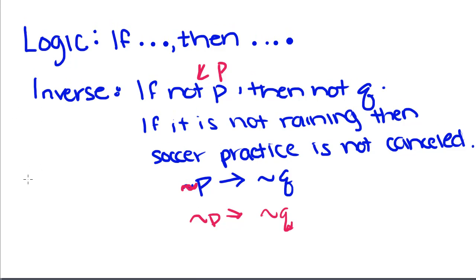careful with this because, like the converse, the inverse is not always true. Think about it: if it is not raining then soccer practice is not canceled. Well, didn't we just say that there could be other reasons soccer practice is canceled? It doesn't always have to be when it's raining. It just says that if it does rain, soccer practice is canceled. So we can't just simply switch, we can't negate each one and say it's true.